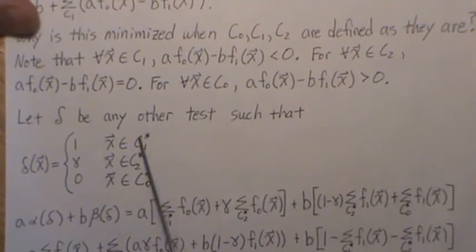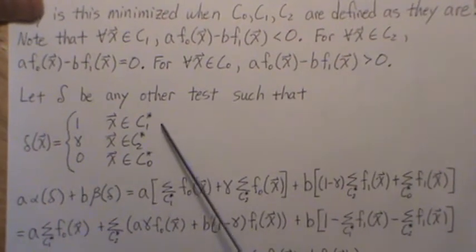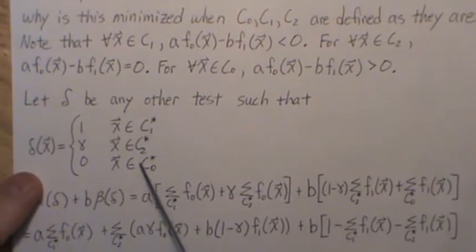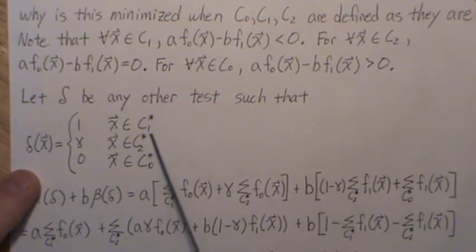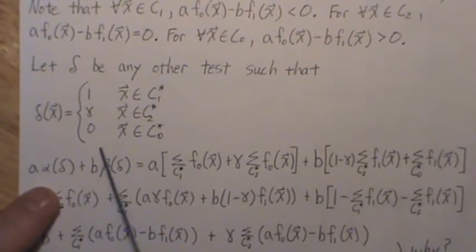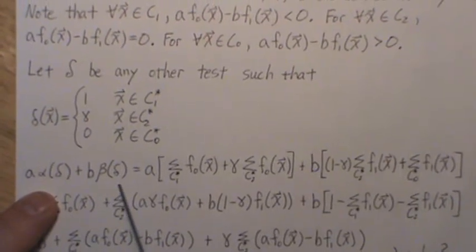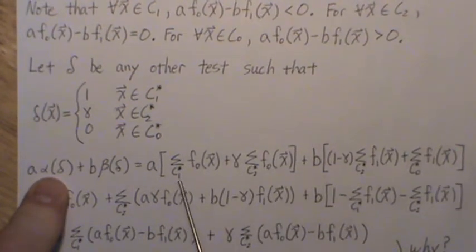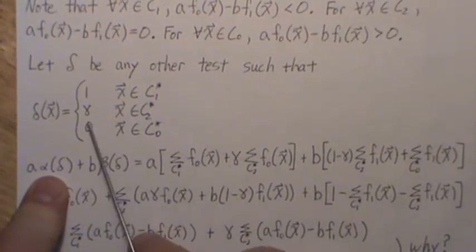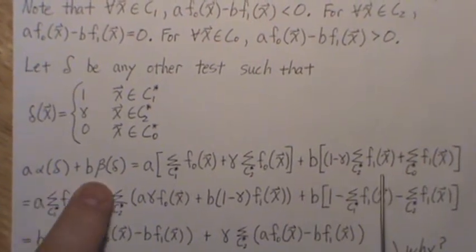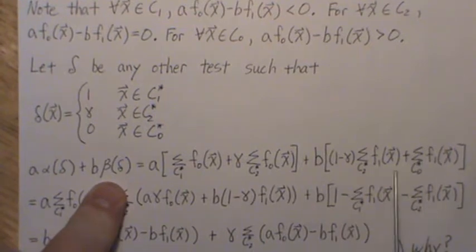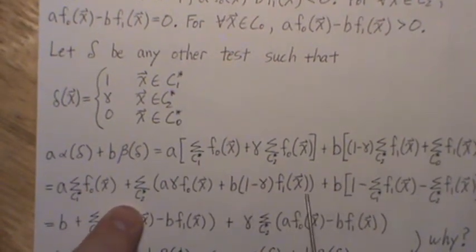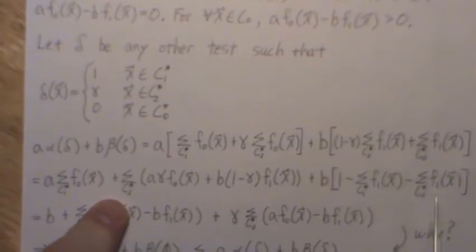But let's look at that. Let's let delta be any other test such that it's this. Now, C1 star, C2 star, C0 star are not like the test function phi. C1 star is not equal to C1 in all these. So now the linear combination of the Type I and Type II errors is this. And then alpha of delta would be this summation over C1 star and over C2 star, but we have to take it times gamma, and then beta is the probability of a Type II error right here.